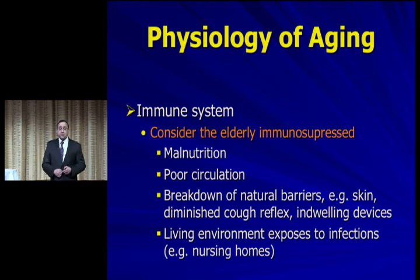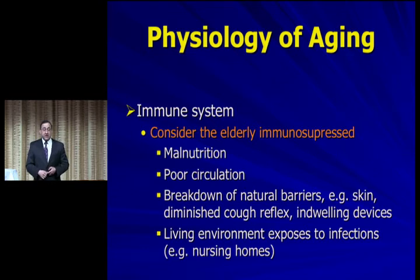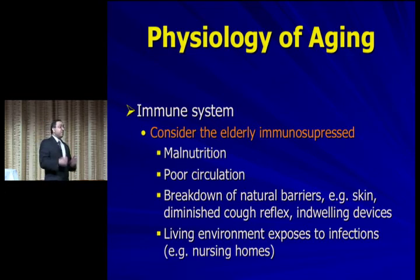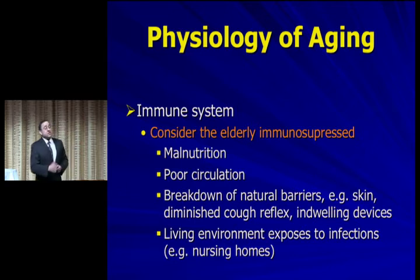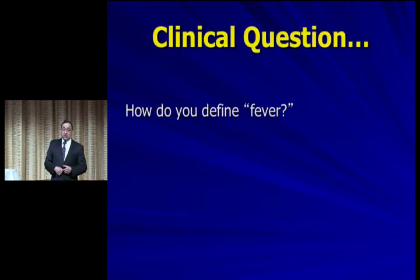Malnutrition contributes, as does poor circulation. They have breakdown of natural barriers — for example, skin. They have little cracks in the skin, which are portals of entry for many different types of bacteria. Also, in their living environments they're oftentimes exposed to more infections, especially if they're in a nursing home. You can practically suck MRSA right out of the air in many of these nursing homes.